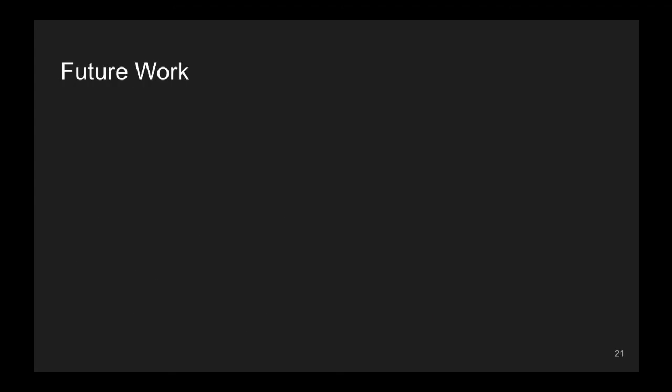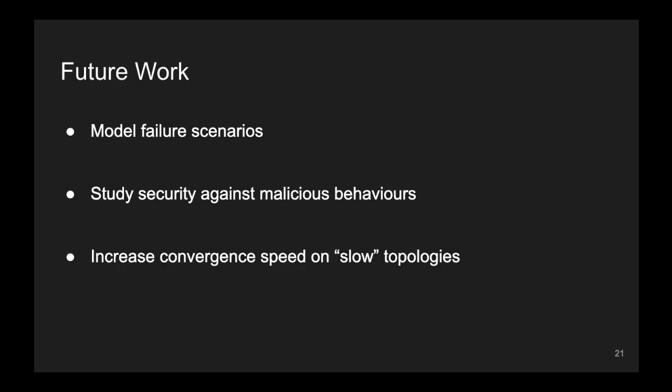But the work in the area is not concluded. We plan to perform more simulations on real-world scenarios, with a particular focus on node and network failures, on all kinds of communication topologies. We would also like to understand how we can protect gossip learning against malicious nodes that might want to bias or slow down the training process. Finally, more research is needed to understand how to speed up gossip learning in those scenarios where our research has shown slow convergence.